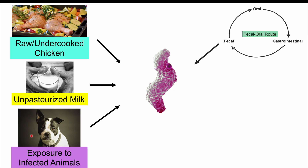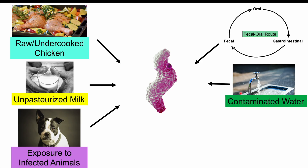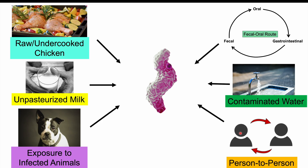There are also human-related routes of transmission. An infected individual can pass Campylobacter through their feces into the surrounding environment, contaminating water sources. If individuals consume contaminated water, they can get infected. There can also be person-to-person infections — from not washing hands after using the washroom — or as a sexually transmitted infection in MSM, or men who have sex with men.